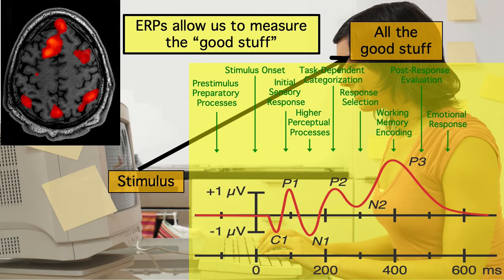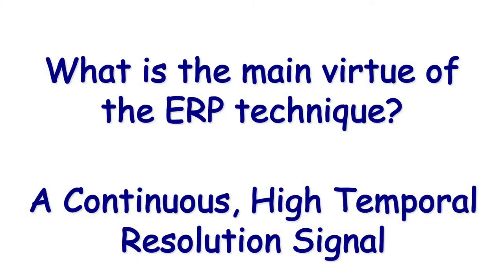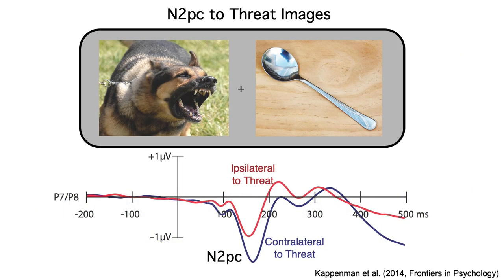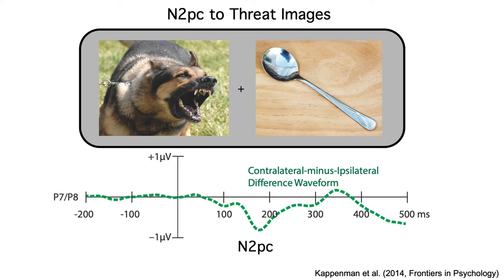So it's not just that ERPs have high temporal resolution — so does response time. The key is that ERPs provide a continuous measure with high temporal resolution. A common use of this temporal resolution is to track processes that are difficult to see directly in behavior. For example, we can use the N2PC component to demonstrate that threat images automatically attract covert attention, which is difficult to see in behavior. We can see this even better in a contralateral minus ipsilateral difference waveform, which tells us that threat and neutral images are differentially processed by the brain as early as 100 milliseconds after stimulus onset.